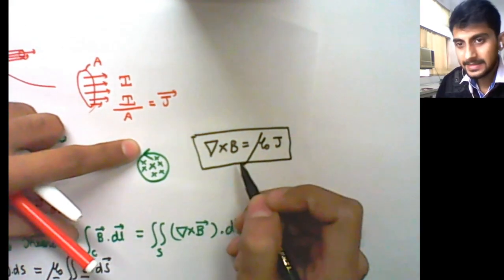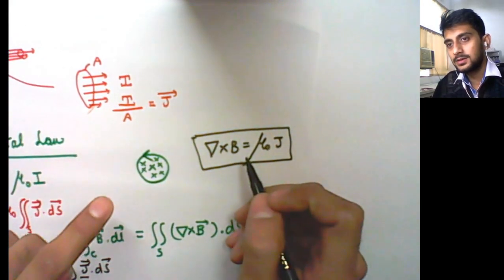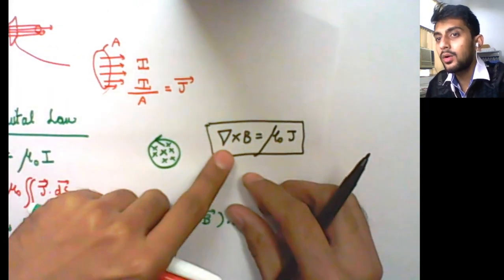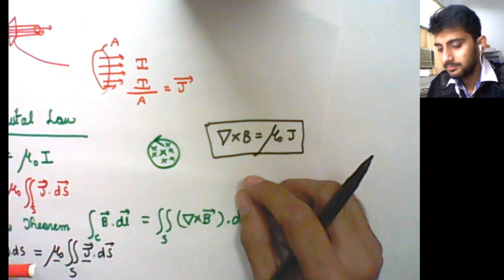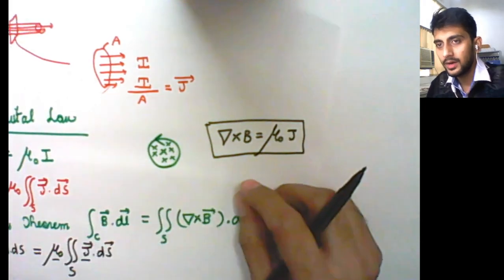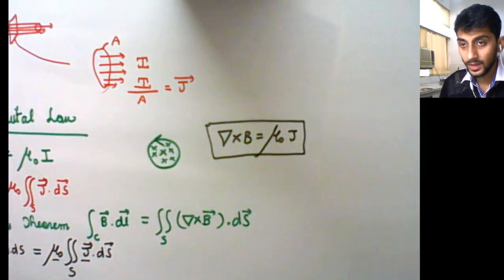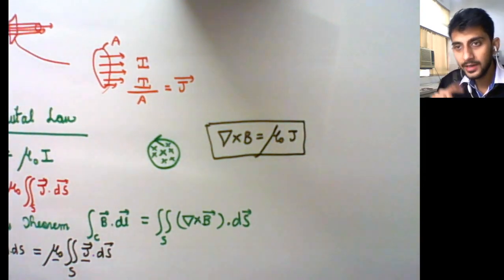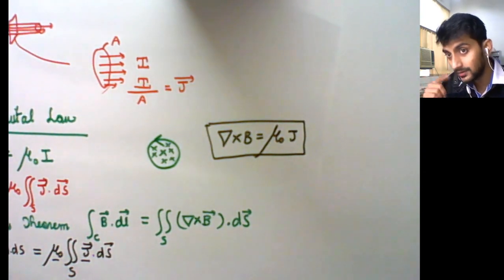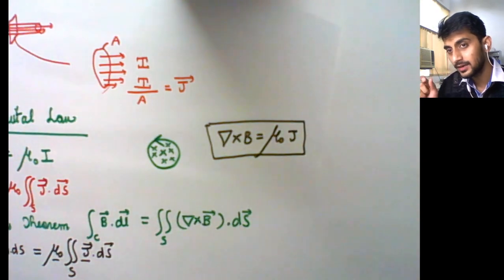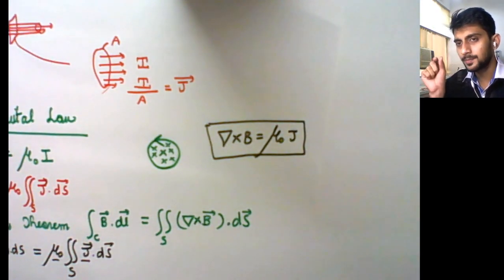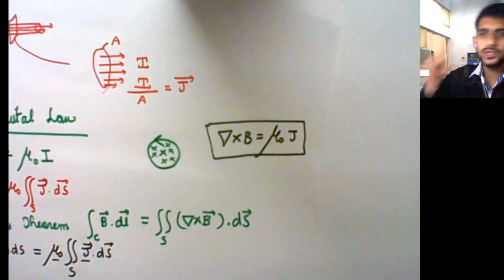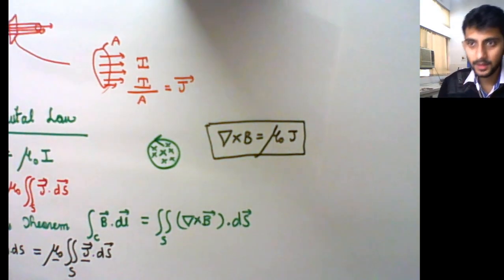This is not Maxwell's equation yet, but Ampere's circuital law in differential form. You know that Maxwell made a correction to Ampere's law: if you have a loop but that loop has a small boundary of dielectric substance, then the conduction current will not flow — only displacement current will flow.